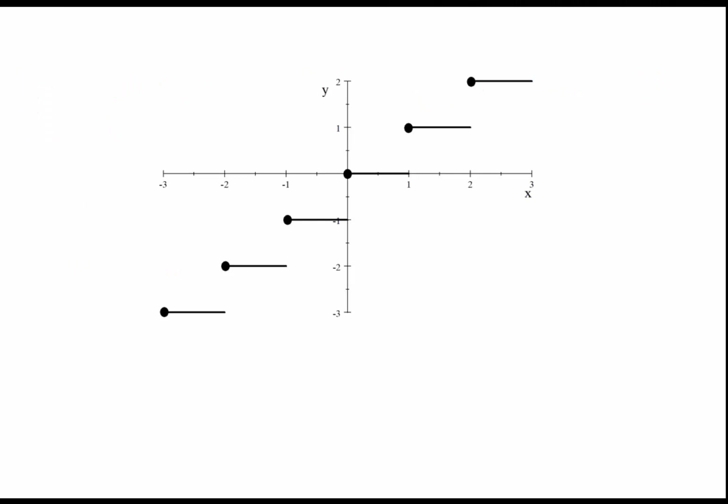So according to the values that we just saw, the graph would be like this. At 0, it is 0. Then between 0 and less than 1, it stays as 0, and so on and so forth. And same for the negative side of x.